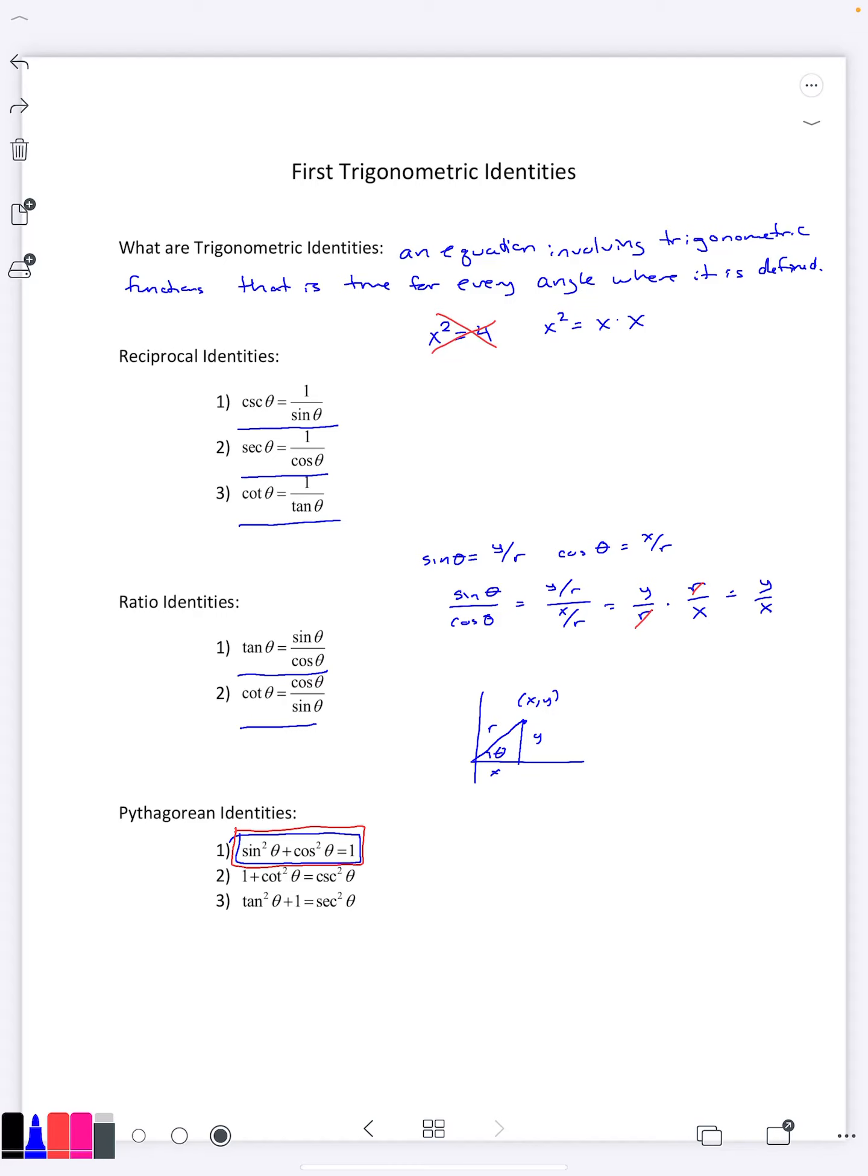And this is, in fact, a right triangle. So the Pythagorean theorem would say X squared plus Y squared equals R squared. That's a true statement Pythagorean theorem. And if we divide everything by R squared, I would have X squared over R squared plus Y squared over R squared is one.